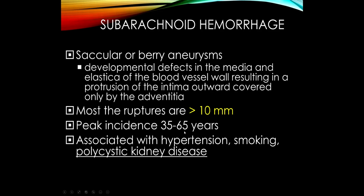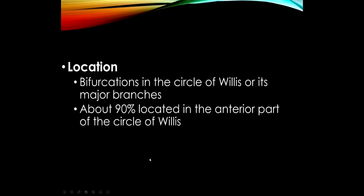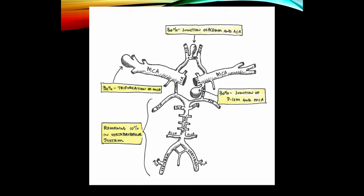The location tends to be at bifurcations in the circle of Willis, almost always in the anterior circulation, because the anterior circulation is under higher pressure. The three most common locations are the anterior communicating artery, the junction of the internal carotid artery and the posterior communicating artery (PCOM), and the trifurcation of the middle cerebral artery. Only 10% occur in the posterior circulation.